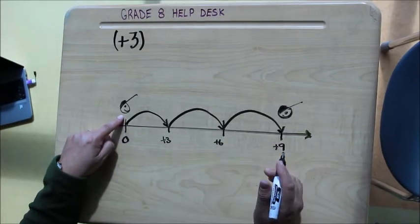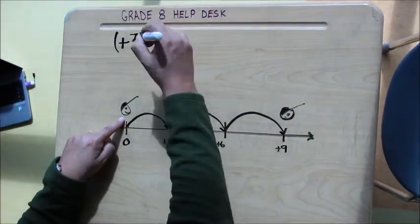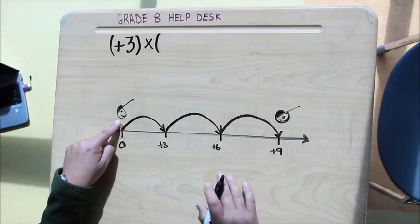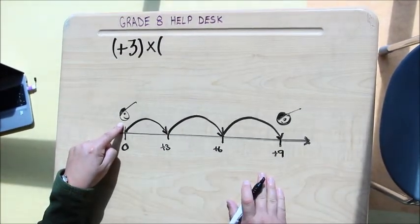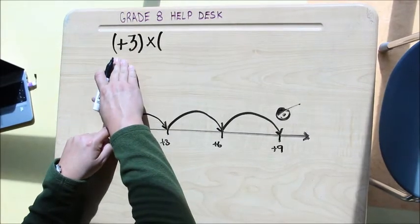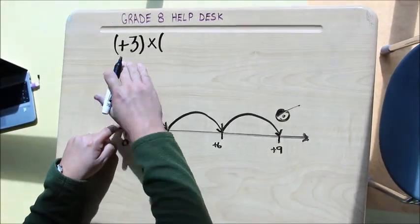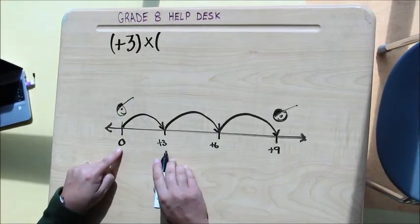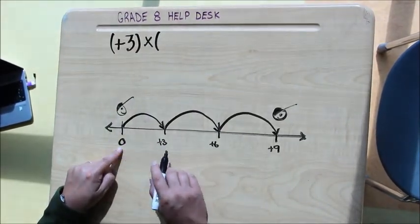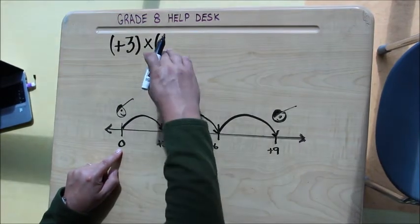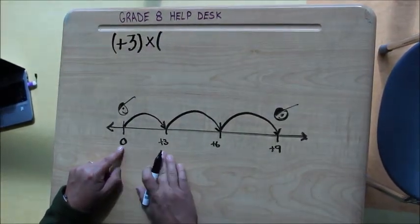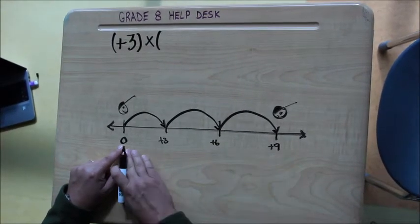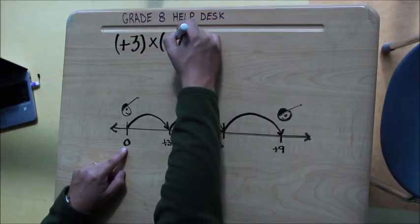We know that this is a multiplication question, and we're going to do our second integer now, figure out what our second integer is. So we have facing positive three jumps of the distance between each jump or the distance of each jump tells us our final number. So here we have zero to three, three to six, six to nine. So we know that each of these jumps is three.